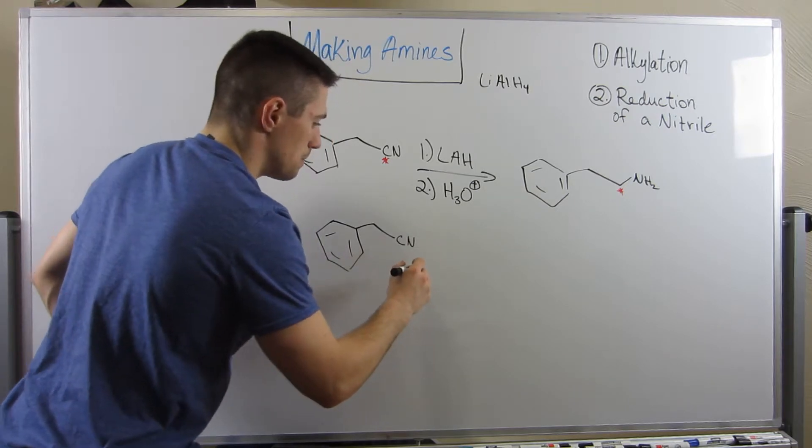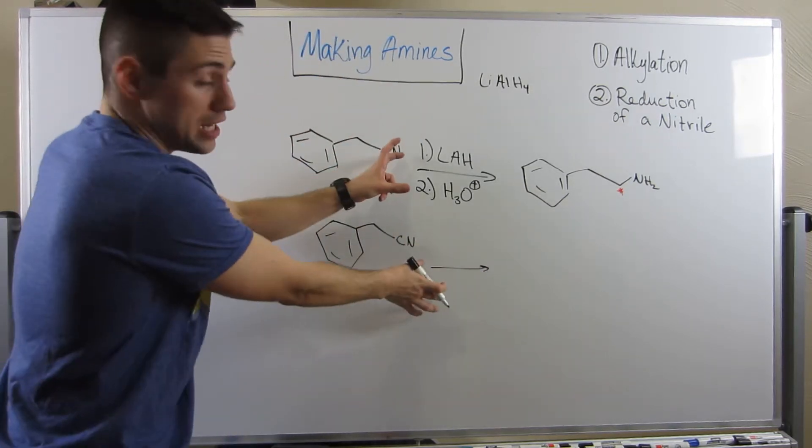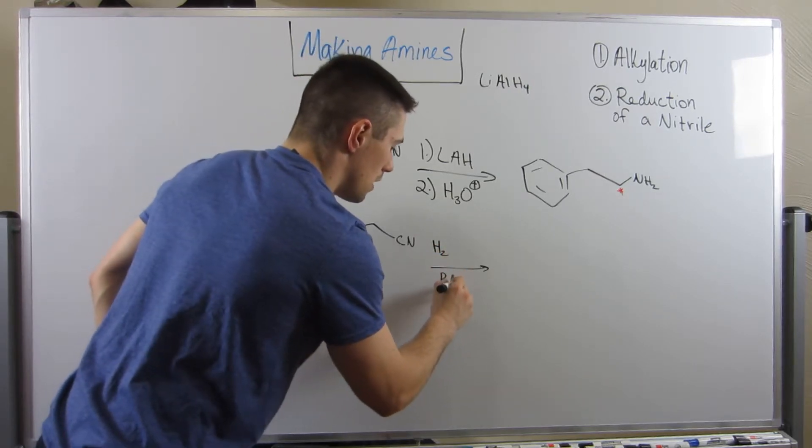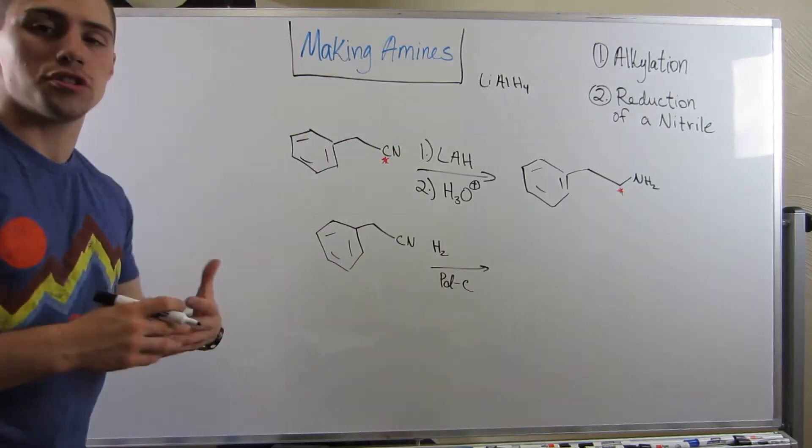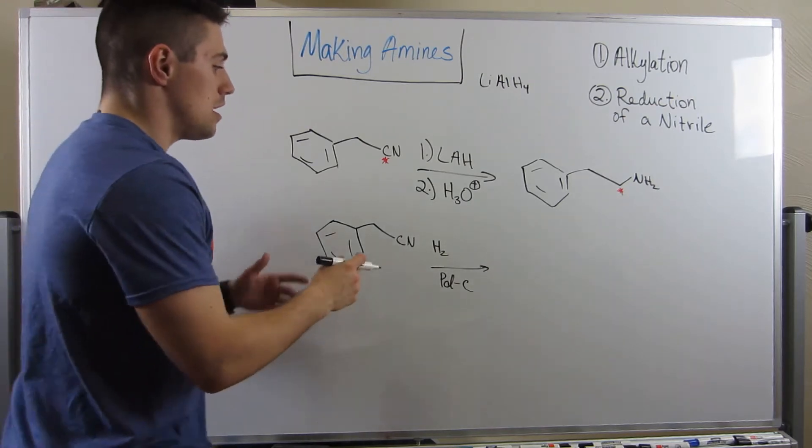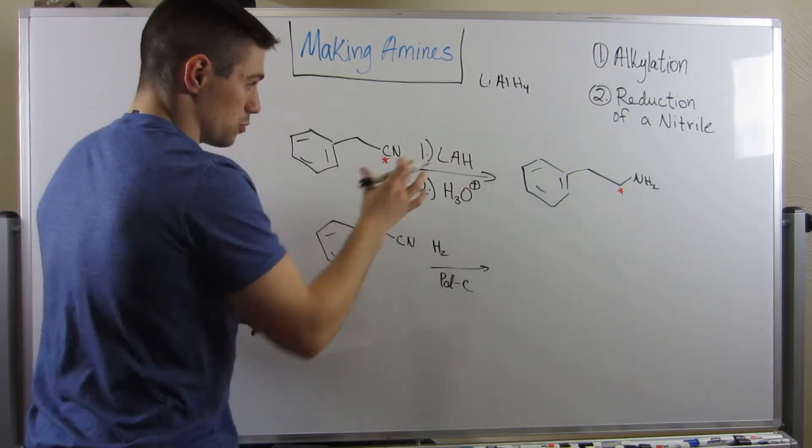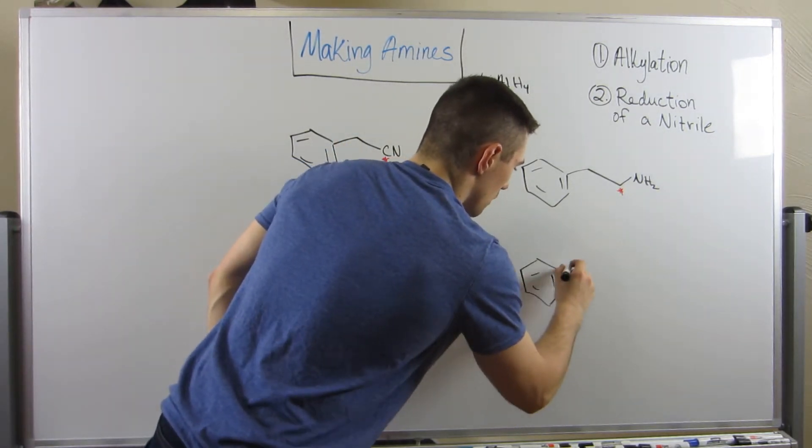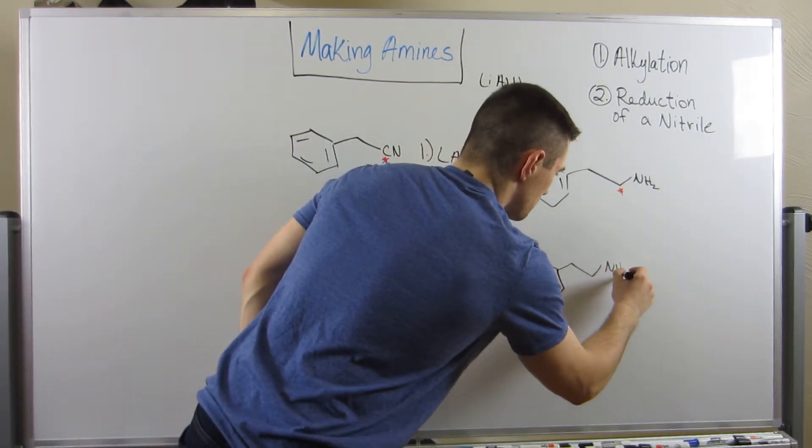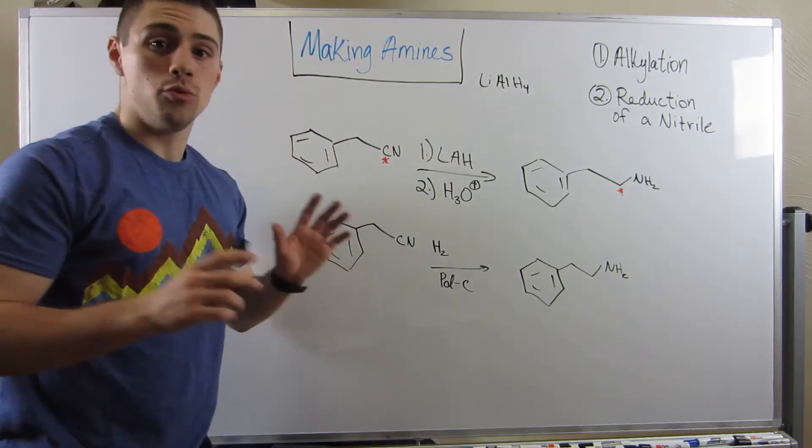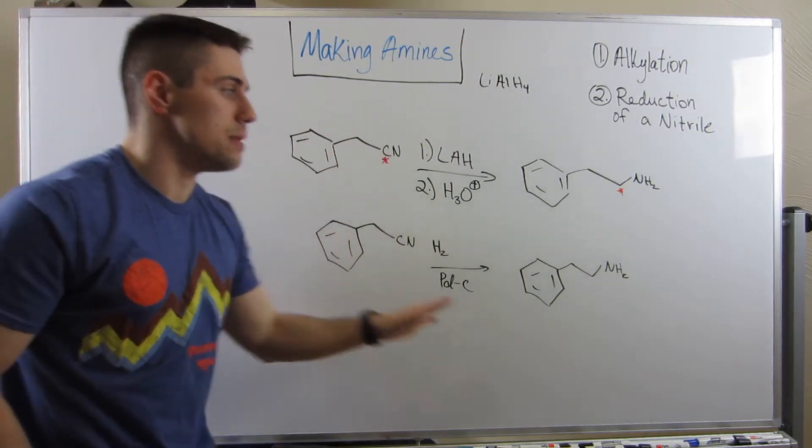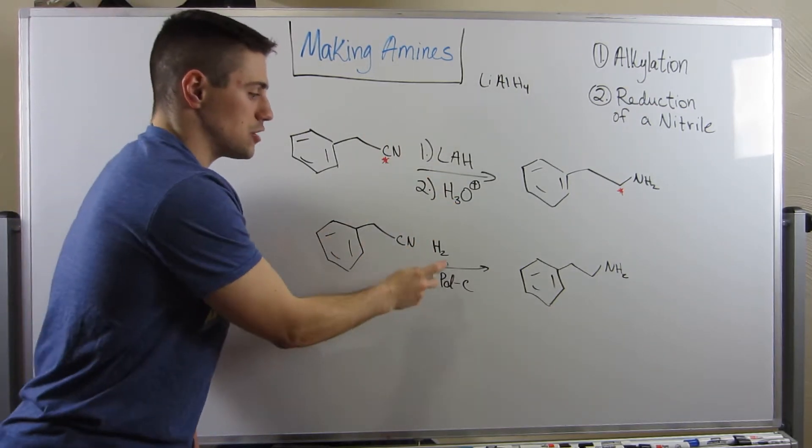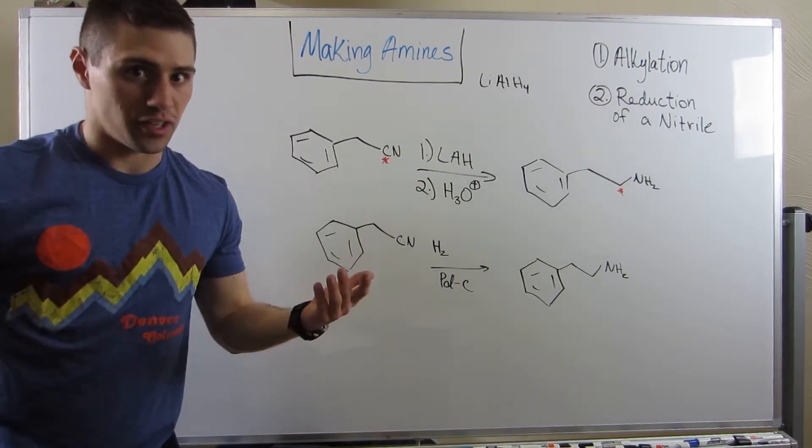Here's the beauty. You can go through this way with LAH and H3O plus, or if we take the same compound, these are equivalent reagents I'm about to use. If we use a throwback, if we use our H2 Pd-C, it accomplishes the same effect. This will reduce our nitrile. This will reduce our nitrile. So you will make the same exact product. Just know two ways you can reduce a nitrile to make an amine. LAH and H3O plus of a nitrile or H2 Pd-C of a nitrile.